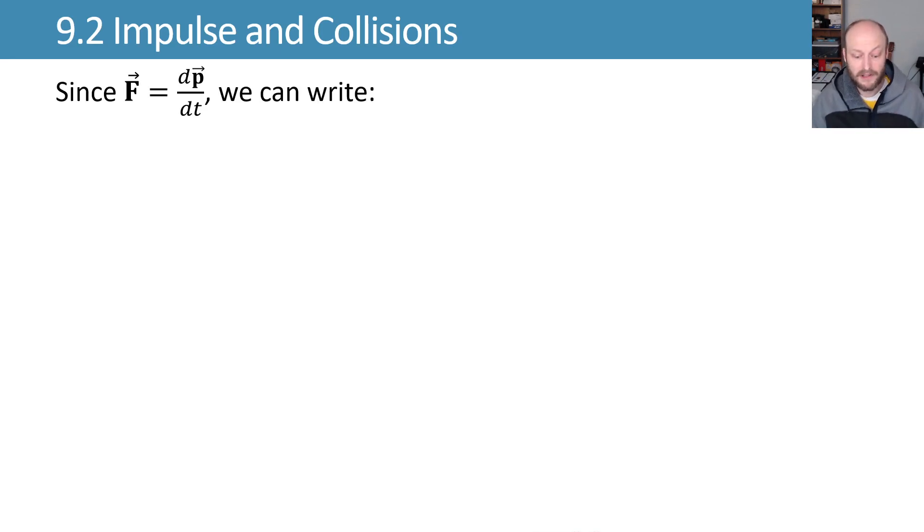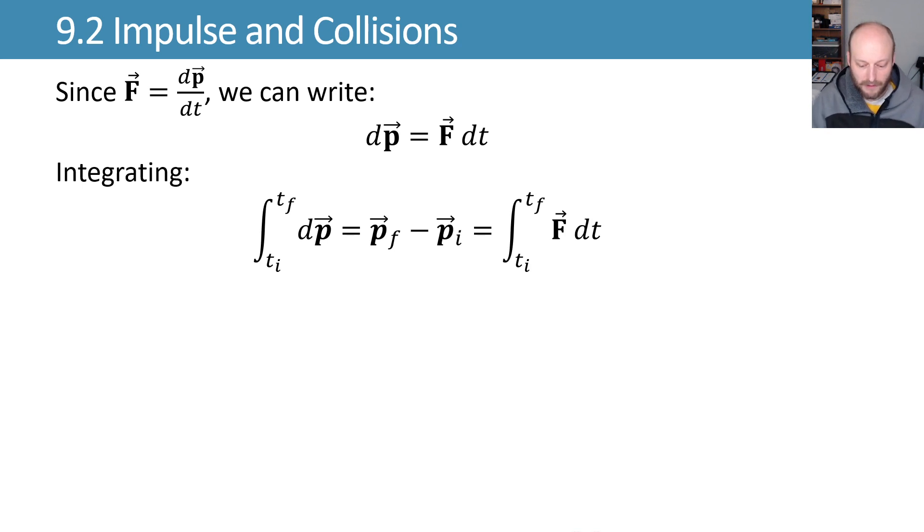Since we know that force is equal to the time derivative of linear momentum, we can write by multiplying by dt on both sides that dp is equal to f dt. We can integrate this, and we're left with on the left the integral of dp just gives us p evaluated at our final time minus our initial time, and on the right the integral of f dt is something that if we had force as a function of time, we could put that in and evaluate that.